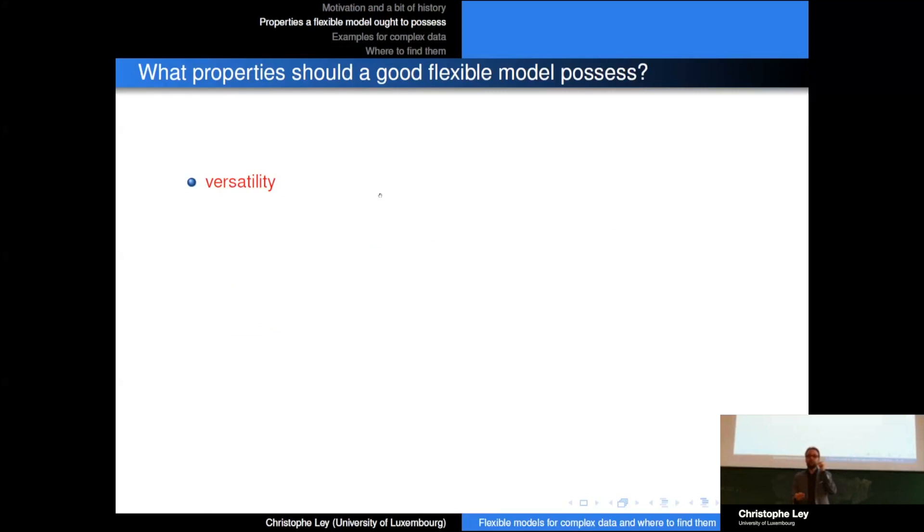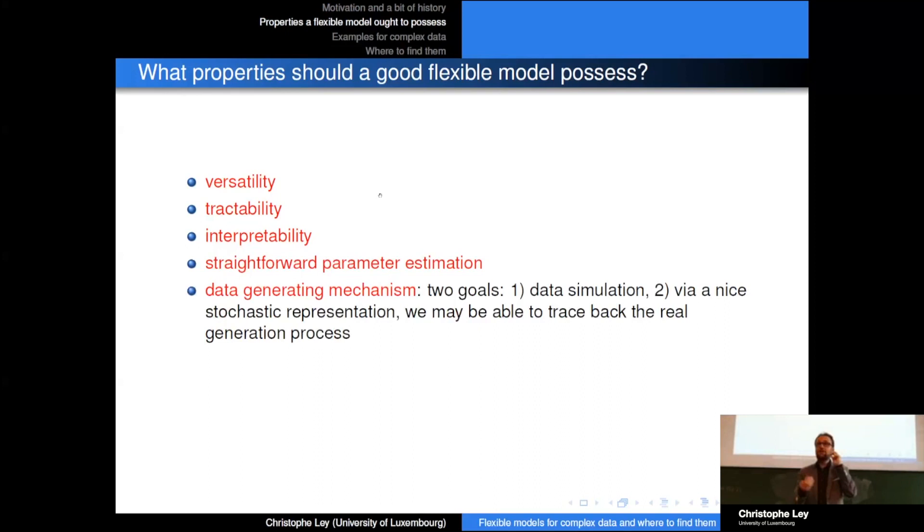Which properties do we want for a good flexible model? As the name suggests, it should be flexible or, let me use this alternative word, versatile. So it should be able, with this one formula, to model various different shapes. It should also be tractable. We know that the more parameters we add, the more flexible our curve can become, but then in the end we will end up with a super complex expression where we don't really understand what is going on and where it just becomes mathematically untractable. Interpretability is very important. We want the parameters of the model to be clearly interpretable, to have roles that you can understand, because only then can you really describe the problem at hand. Straightforward parameter estimation - I think this is an obvious one. If we have a model of which we cannot estimate the parameters, well then we will not be able to fit it well to the data.